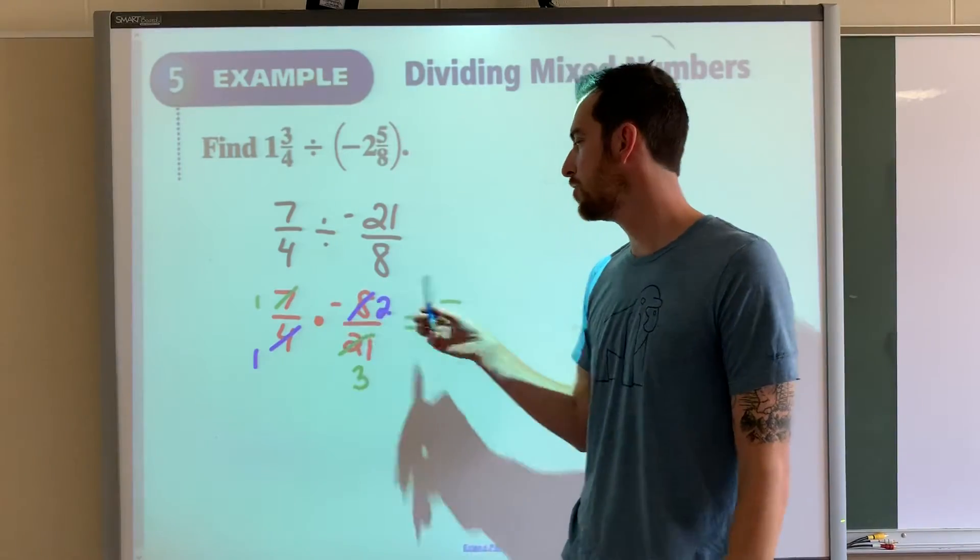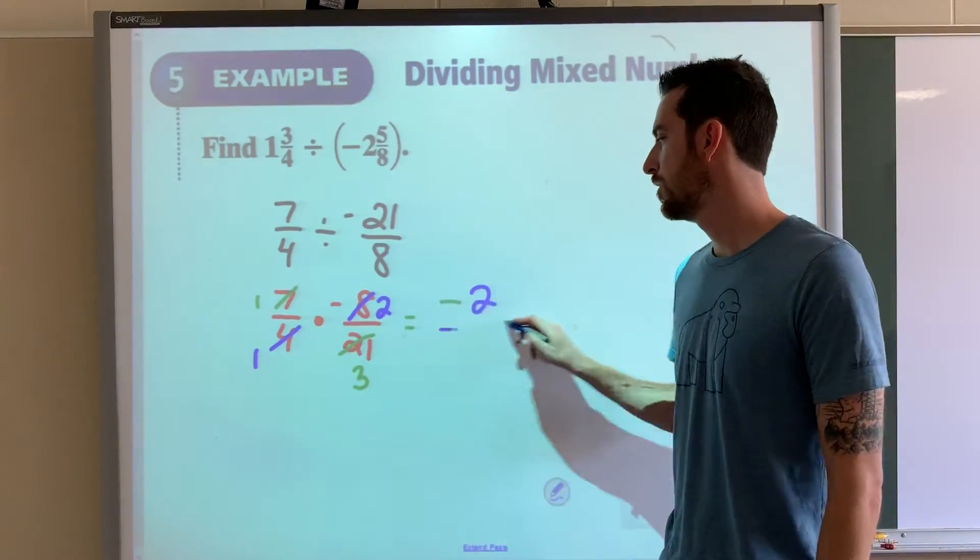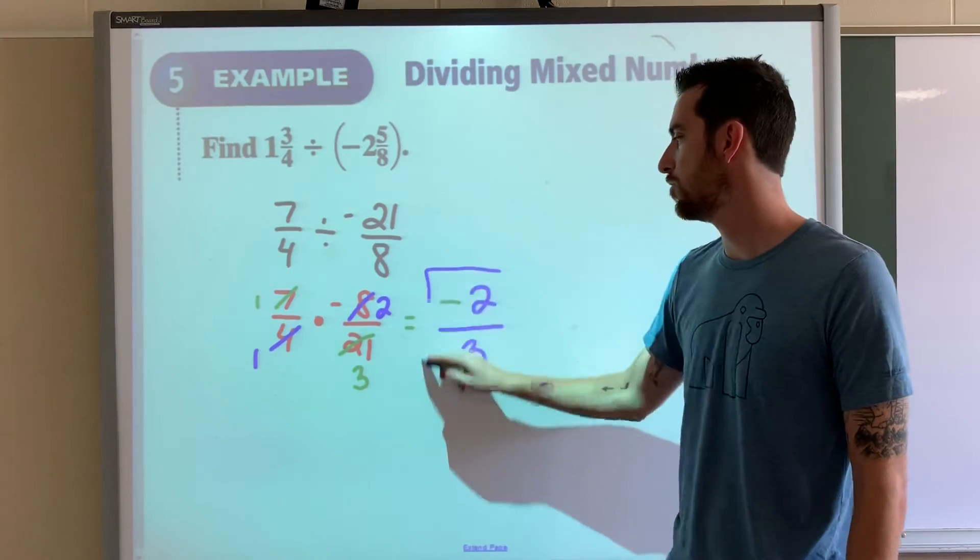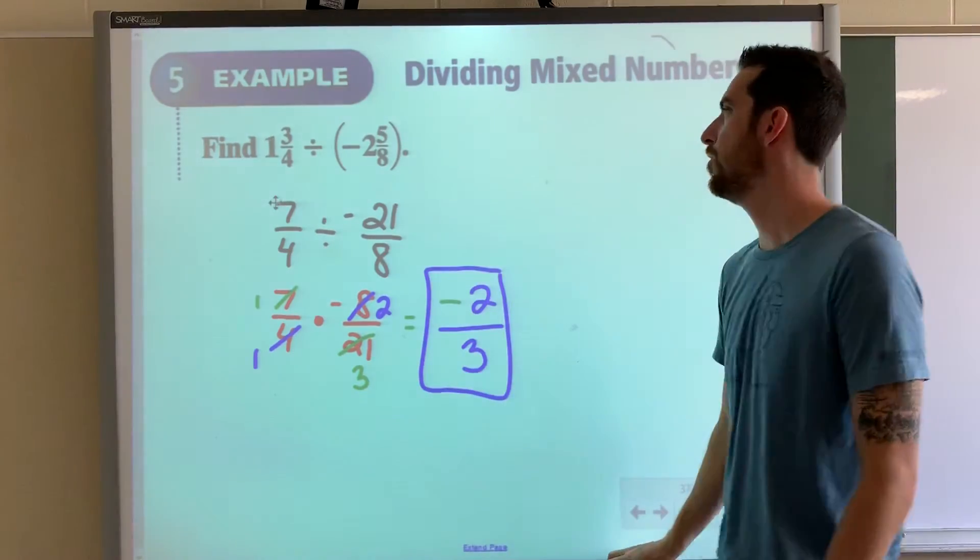So we have 1 times negative 2 is negative 2. Denominator, we have 1 times 3, so we have negative 2 thirds. So here's cute groups.